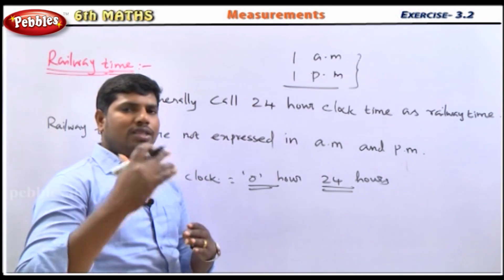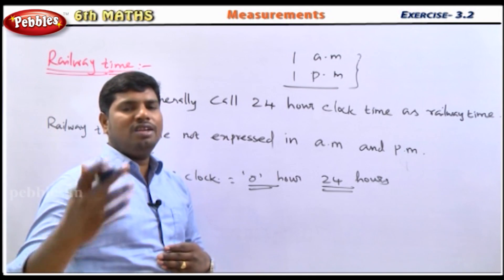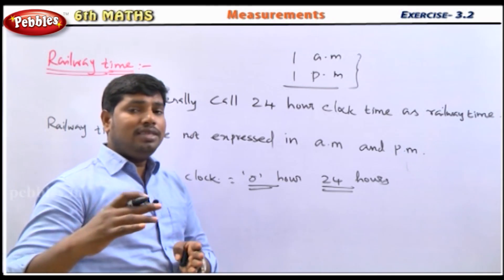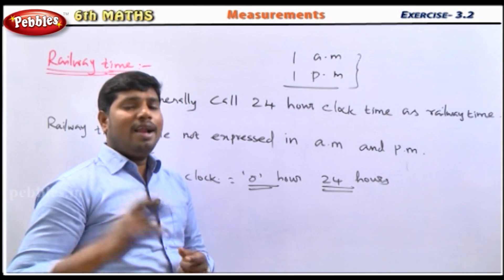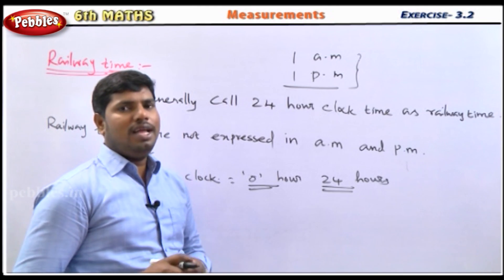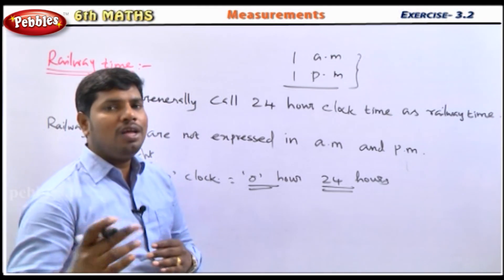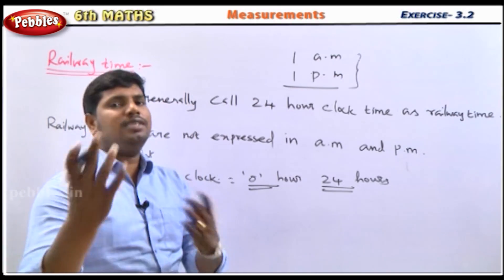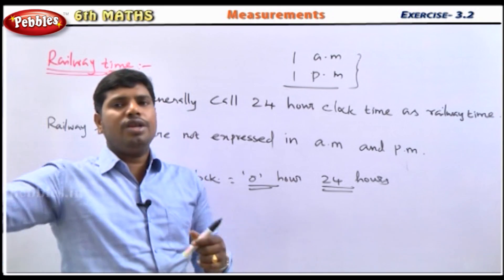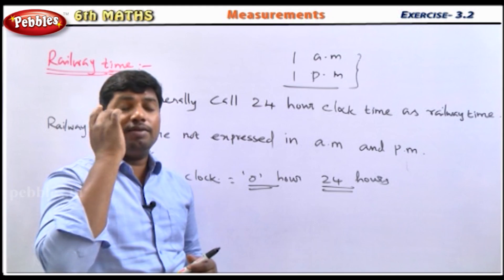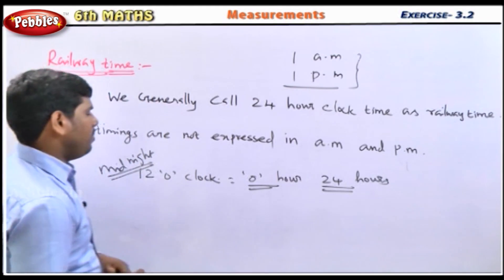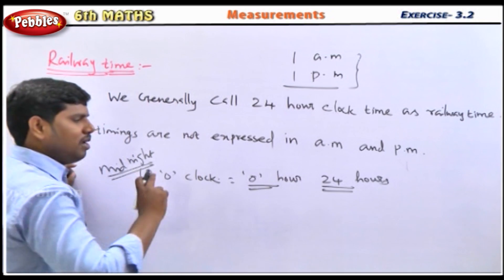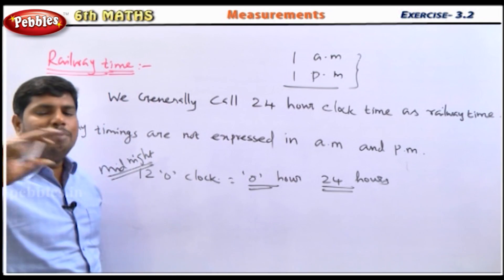23:01, 23:02, up to 23:59 — because 1 hour has 60 minutes, and when 60 minutes are complete, it becomes 24 hours, which is the same as 0 hours. It is a full circle rotation — per day 24 hours. So midnight is when 24 hours complete, same as 0 hours.